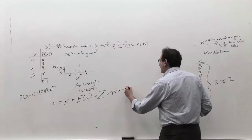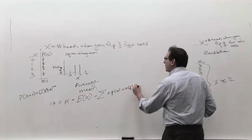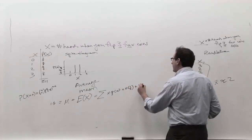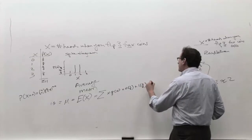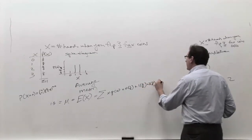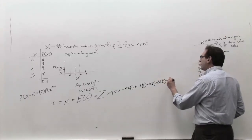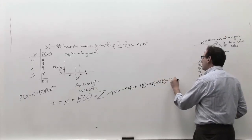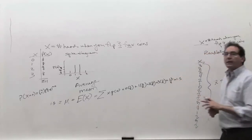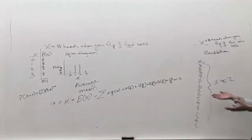0 times 1 out of 8 is 0, 1 times 3 out of 8 is 3 out of 8, 2 times 3 out of 8 is 6 out of 8, and 3 times 1 out of 8 is 3 out of 8, and then it comes out to 12 out of 8, which is 1.5. So the answer mathematically boils down to the same answer of common sense and also experience. It's nice when all three things work out the same way.